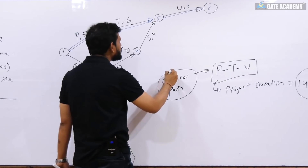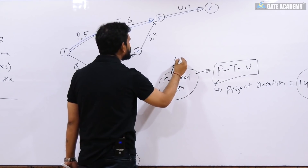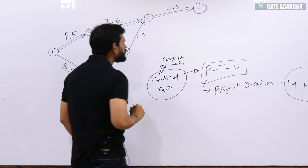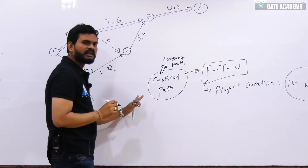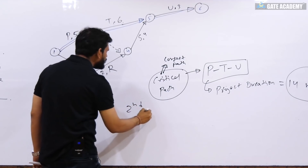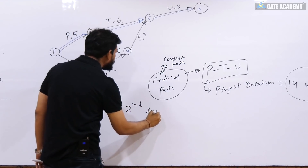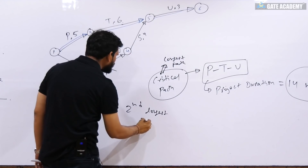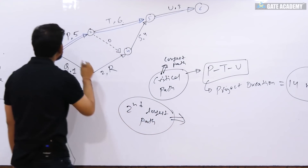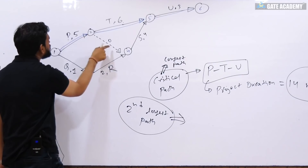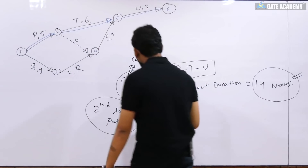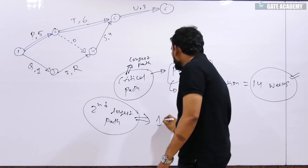This is the longest path of the network — the critical path. You can see from node 1 to node 2: 5 plus 0 is 5, that means node number 1 to 2.